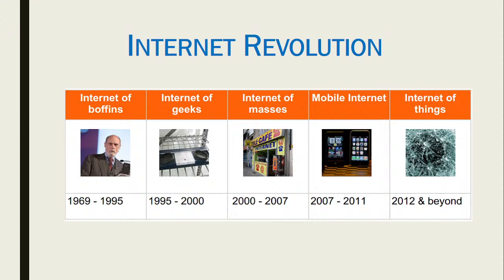Major companies like Amazon already started their internet business during this time, beginning with delivering books through the Internet. Then in the late 90s and early 2000s came the big IT boom. If you take India, this is how Bangalore became an IT hub. Companies like Infosys — one of the world's leading IT companies — were established during this time. Internet-related company stocks went high. After the IT boom, the Internet became more popular. That era is called the Internet of Masses.